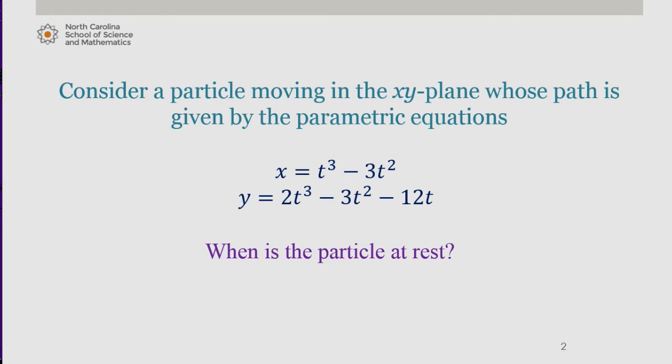When is the particle at rest? Well, we know that the speed of the particle can be calculated by finding the square root of the sum of the squares of the derivatives of x and y respectively.